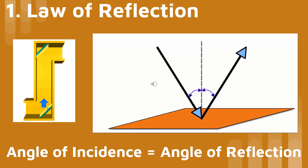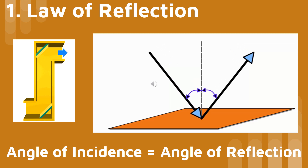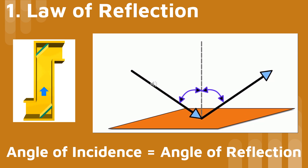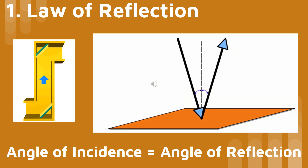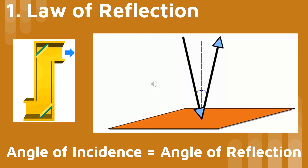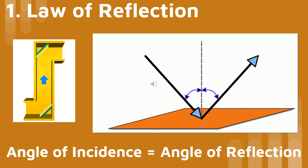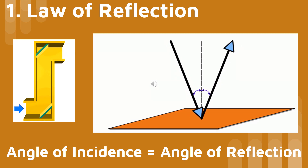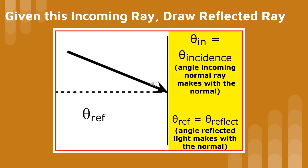The incoming and the reflected ray will always form the letter V. The angle that the incoming ray makes with the normal equals the angle that the reflected ray makes with the normal. Given the incoming ray, would you be able to draw the reflected ray?